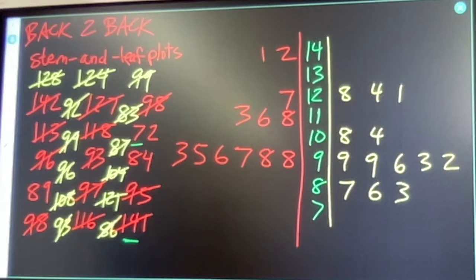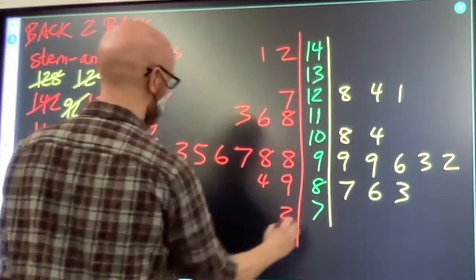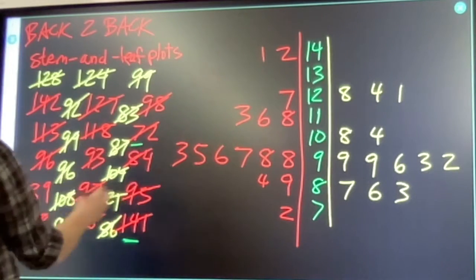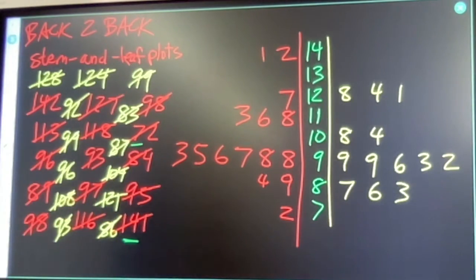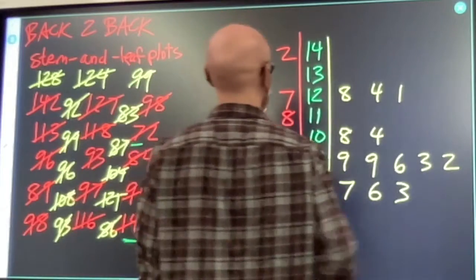89, 84, 72. That is a back-to-back stem and leaf plot with this set of numbers.